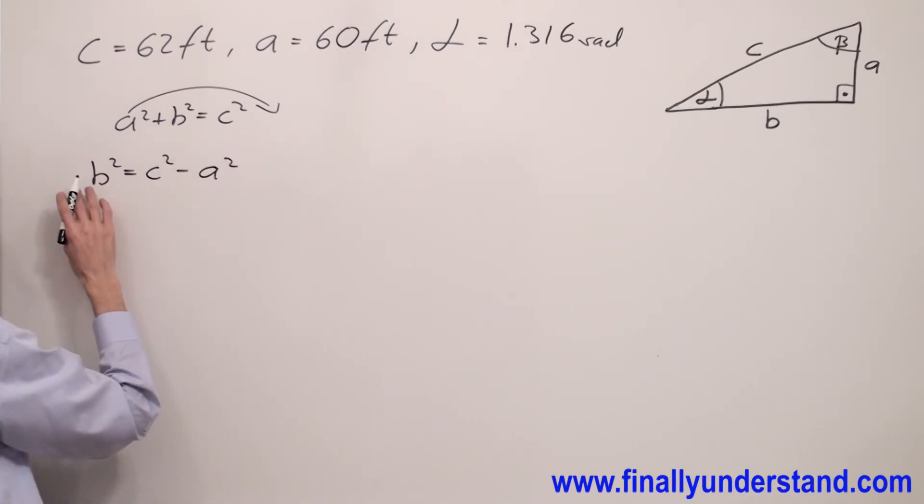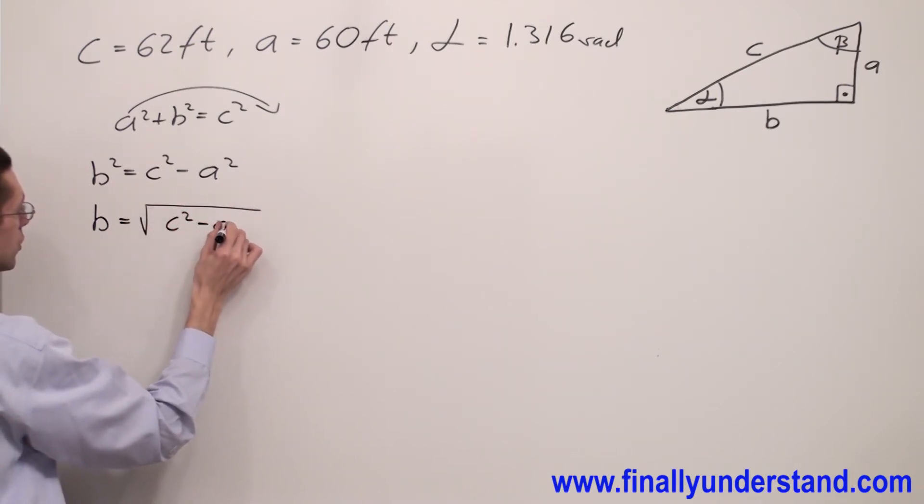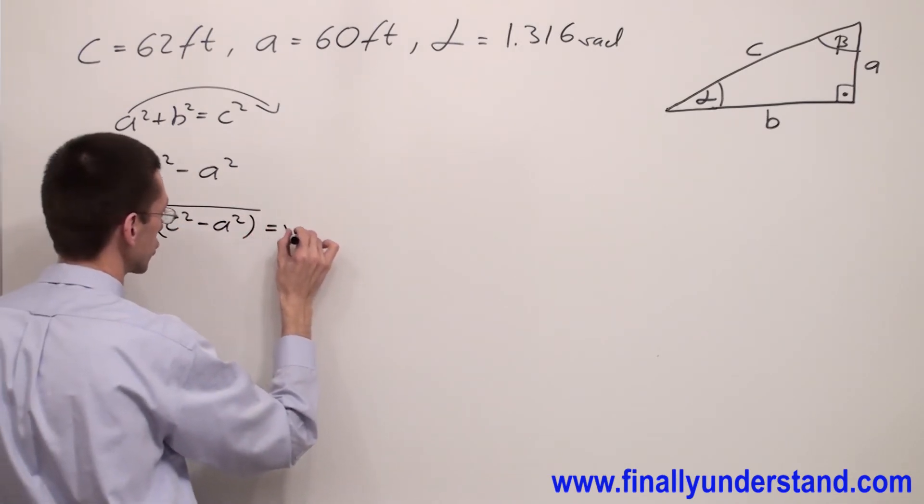In order to find B, I'm supposed to square root both sides of this formula. So B equals the square root of C squared minus A squared.